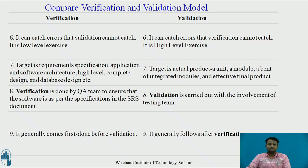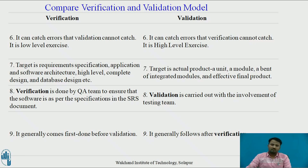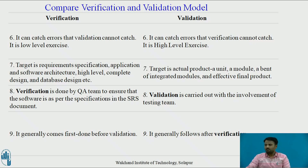The target of Verification is requirements specification, application and software architecture, high level complete design and database design, etc. The target of Validation testing is the actual product: a unit, a module, a set of integrated modules, and the final product. Verification is done by the QA team — Quality Assurance team — to ensure that the software is as per the specifications in the SRS document. Validation is carried out with the involvement of the testing team. Verification generally comes before Validation, and Validation is followed after Verification.